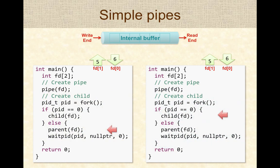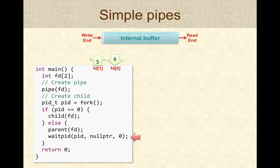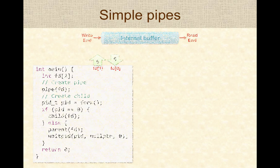Once the data transfer is done, the parent and child methods return to main. The child process finishes while the main process waits for the child to complete. Once the child process is done, the main wait-pid will expire and the main process will also complete, and the pipes and program will be cleared out by the operating system.